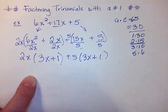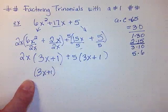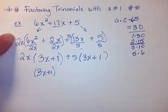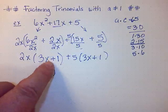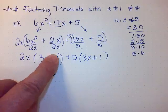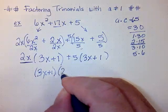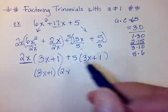I can think of this the same as what I did up here. If I pull out a 3x plus 1, that's also going to divide out this 3x plus 1. So all I'll have left is the number in the front here, which would be 2x. And then if I pull out this 3x plus 1, I would have the 5 left. So this would be my final answer.